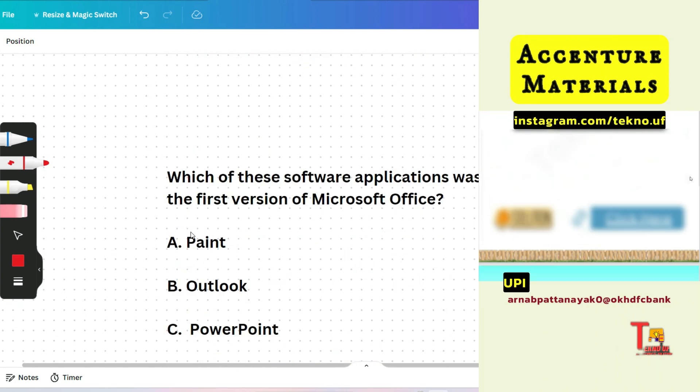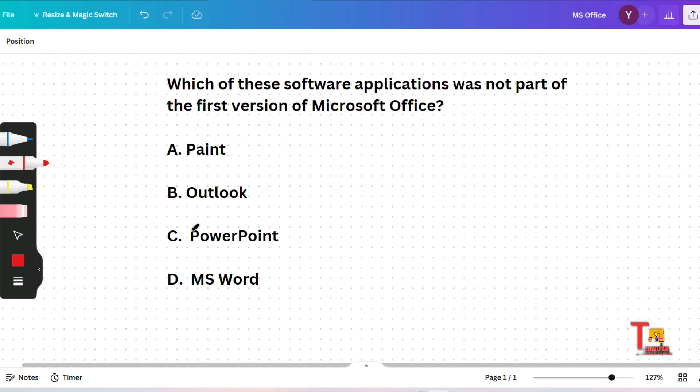The next question is: which of these software applications was not part of the first version of Microsoft Office? MS Paint, MS Outlook, PowerPoint, or MS Word. I hope you might have knowledge about this, or might not have also. The correct answer in this case will be Outlook. This software was not part of the first version of Microsoft Office.